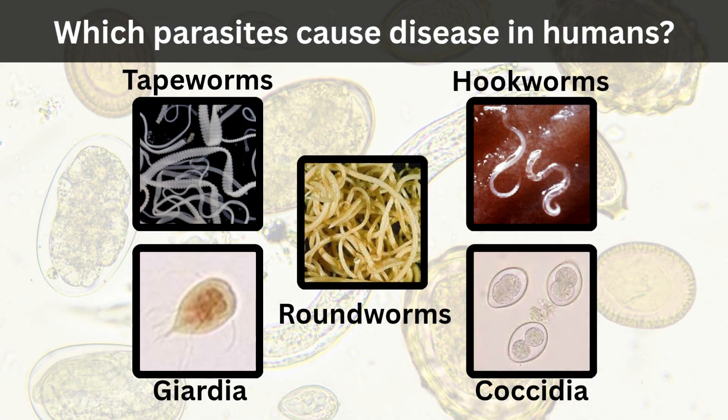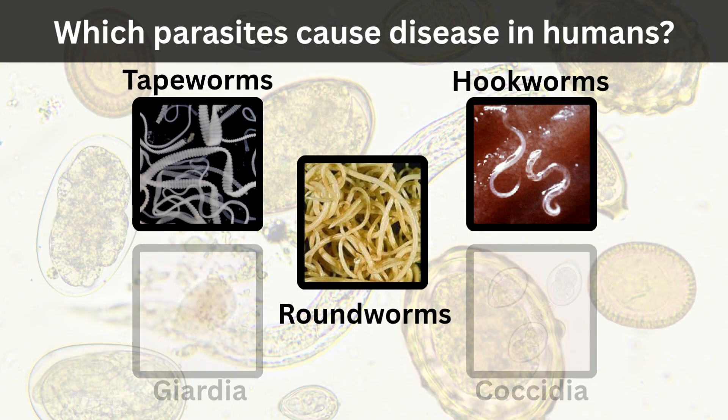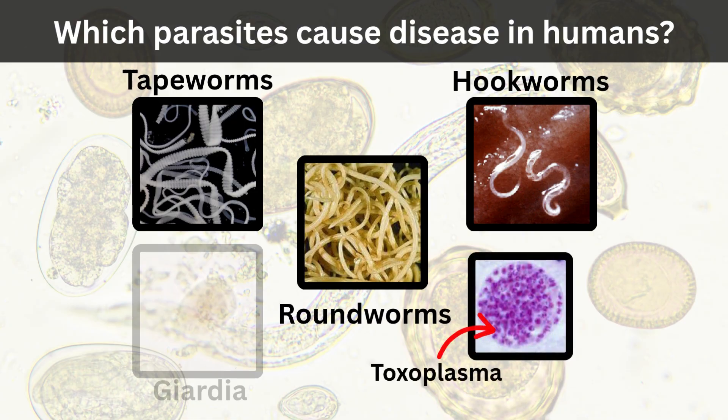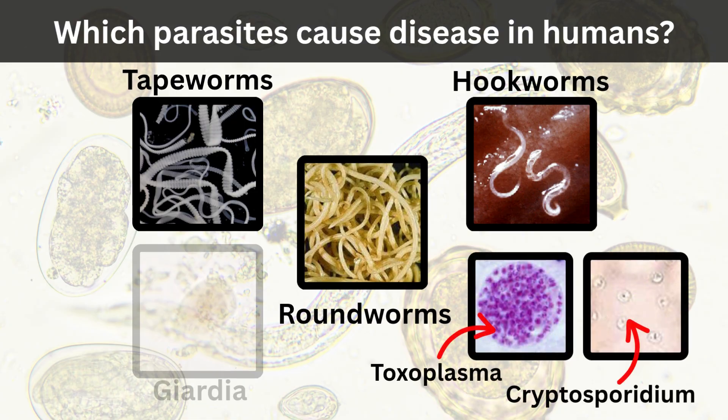Quick quiz question: which of these parasites can cause disease in humans? Roundworms, tapeworms, and hookworms can all cause disease in humans, especially kids, the elderly, and the immunocompromised. While the coccidia discussed in this video does not cause disease in humans, different species of coccidia can — namely toxoplasma and cryptosporidium. As far as we know, giardia is rarely transmitted to humans. The take-home message here is wash your hands.